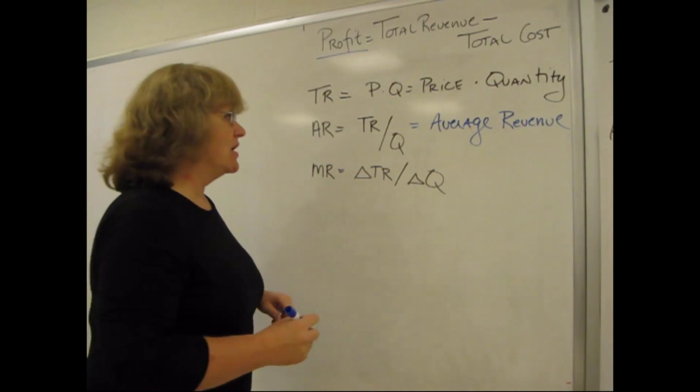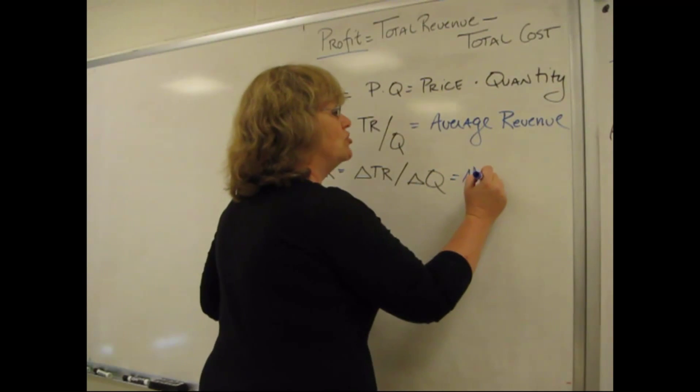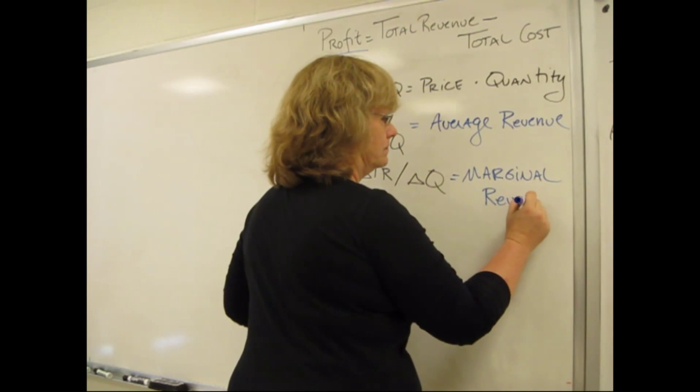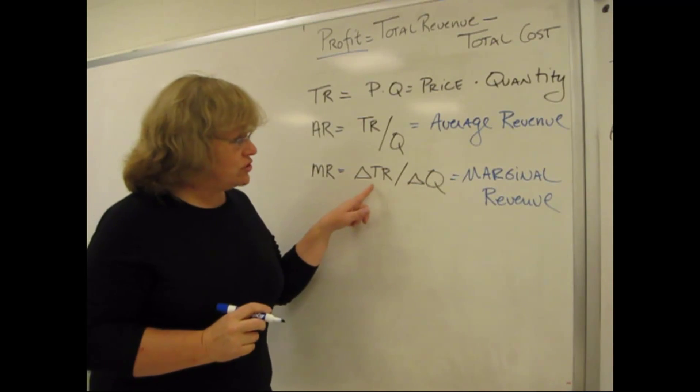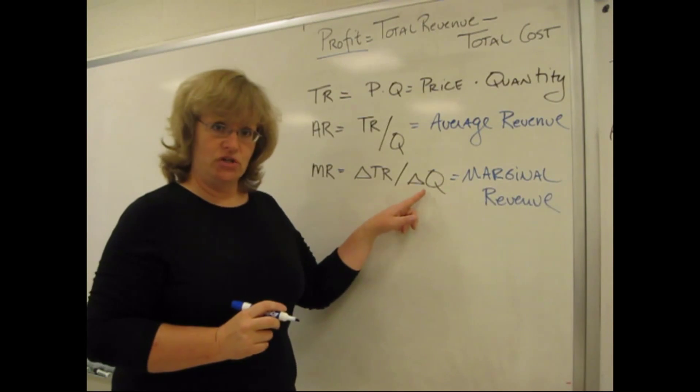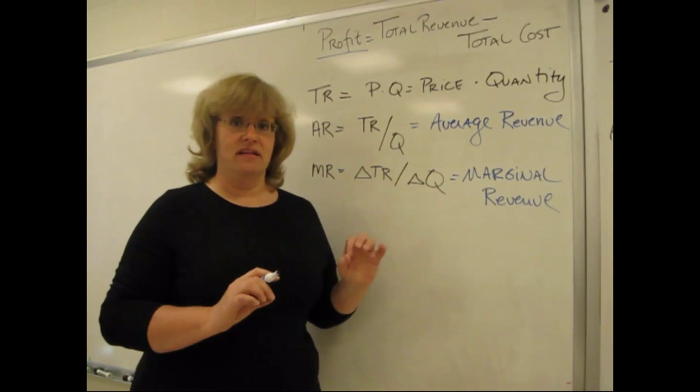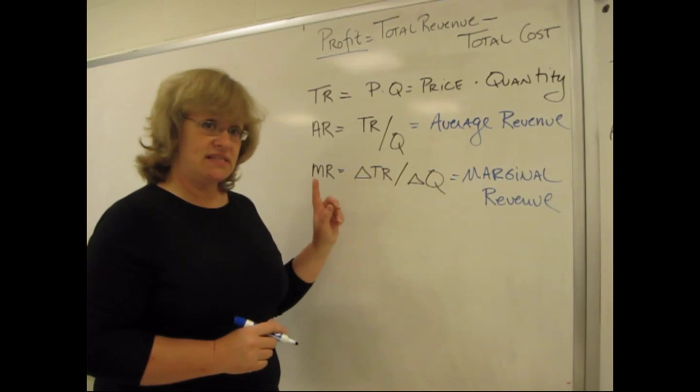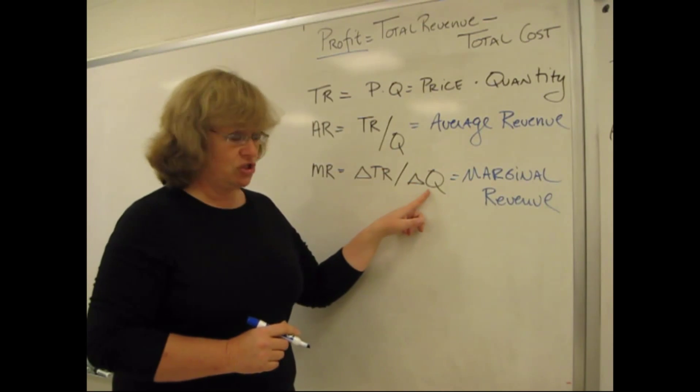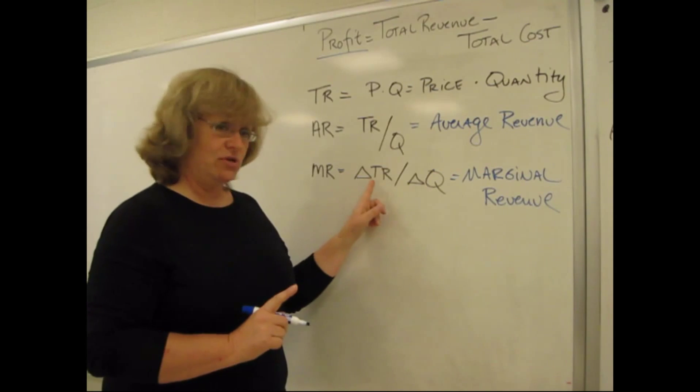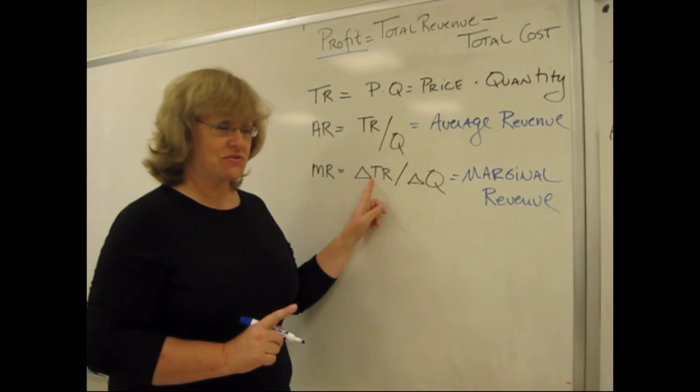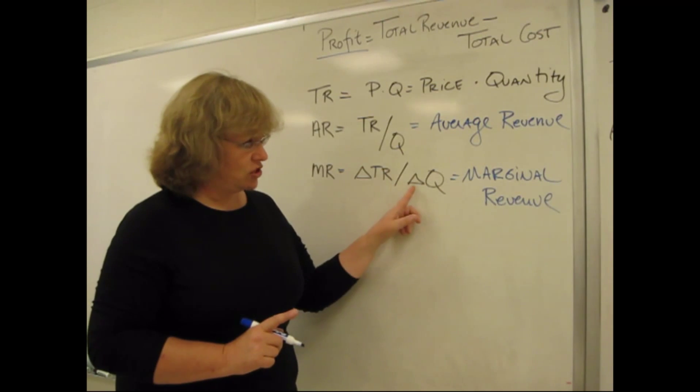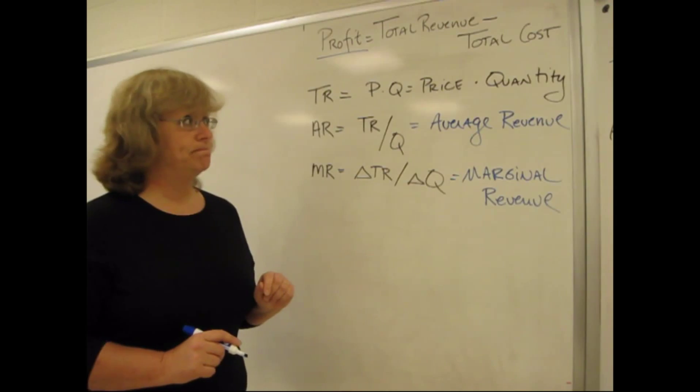MR in your textbook is defined as marginal revenue, which is the change in total revenue divided by the change in quantity. Remember that delta, that mathematical symbol that looks like the little triangle means change. So what this says is, as I sell one more, as I change quantity by one, how much does my total revenue go up by? You hope it goes up. How much does my total revenue change by? So it's change in total revenue divided by change in quantity. That's the marginal revenue.